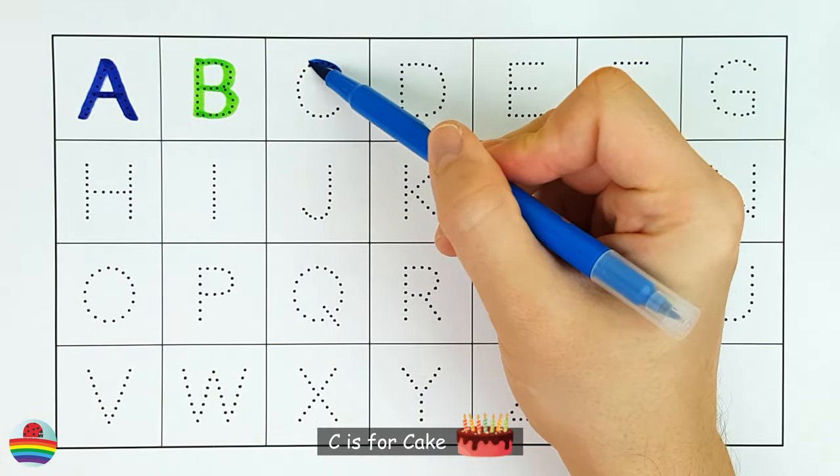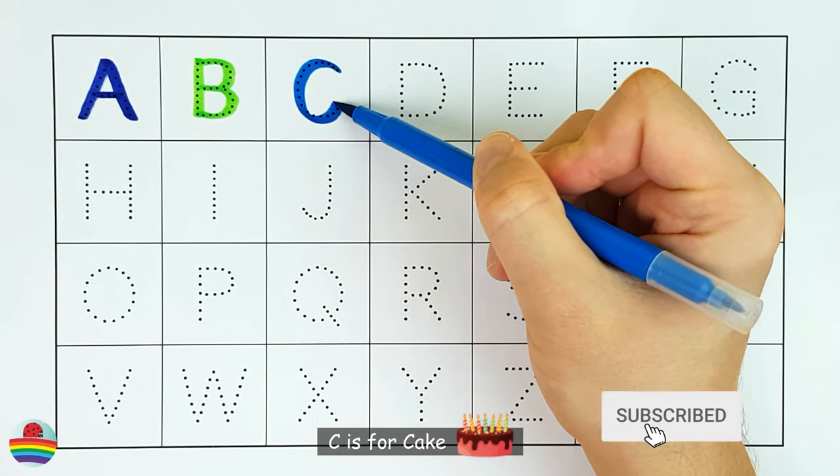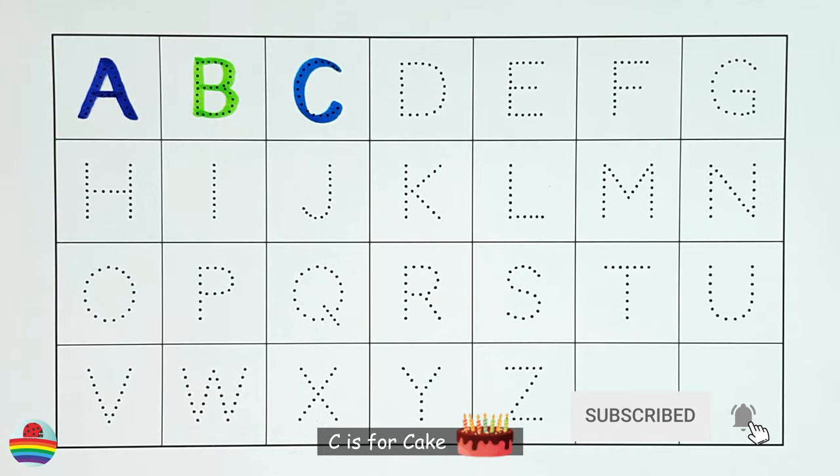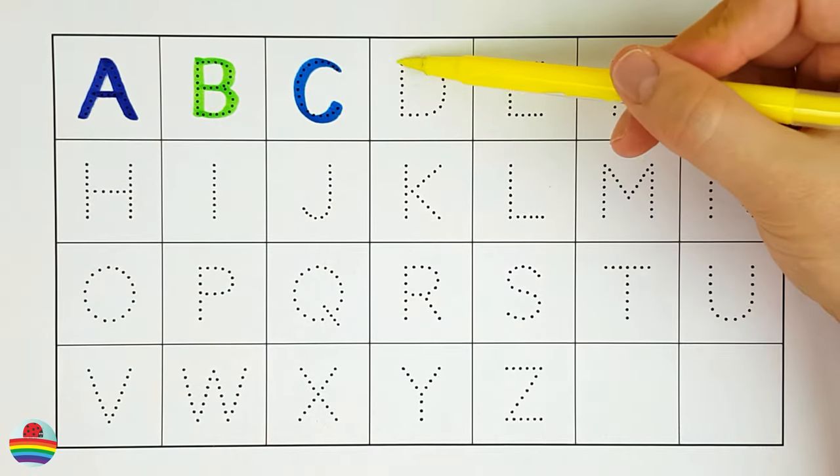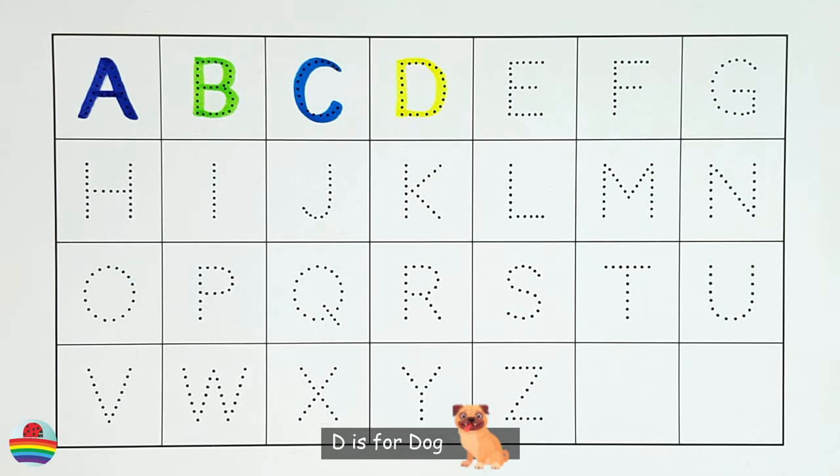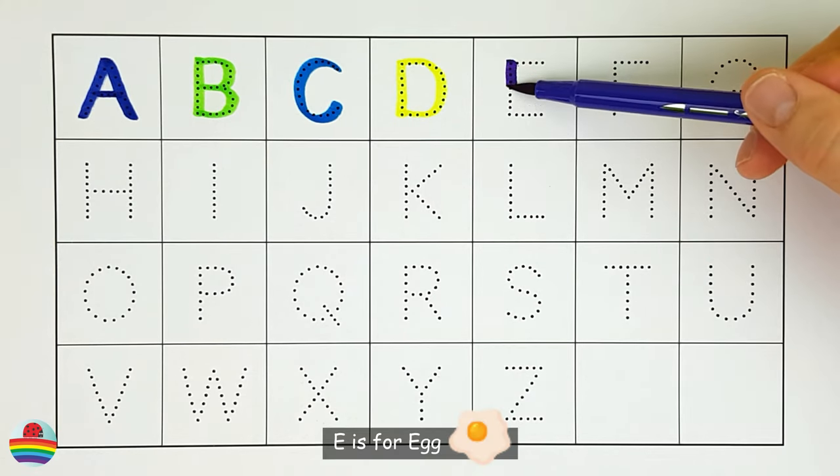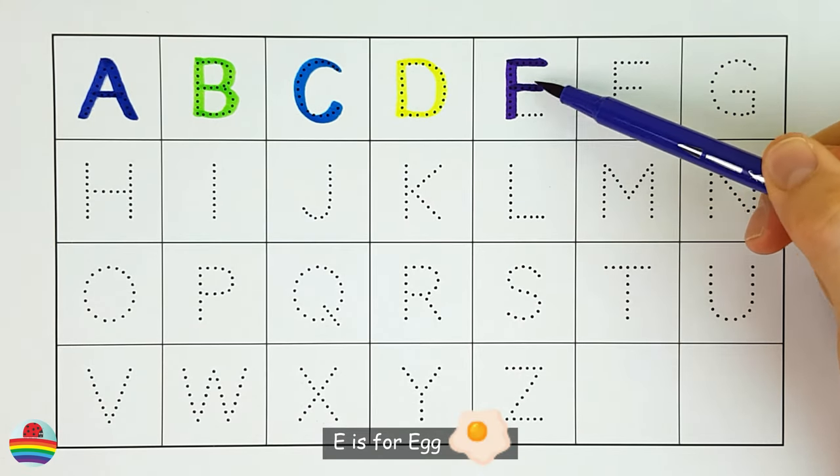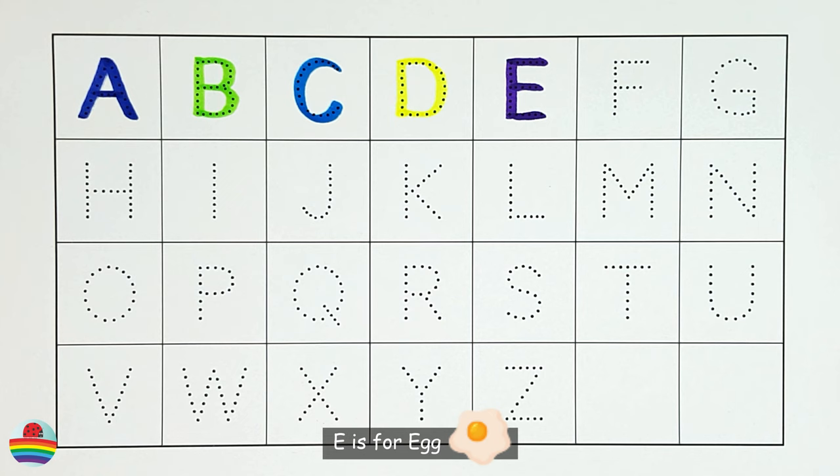C. C is for cake. C. D. D is for dog. D. E. E is for egg. E.